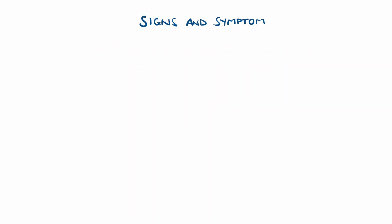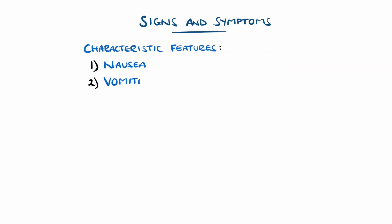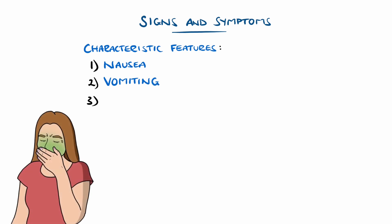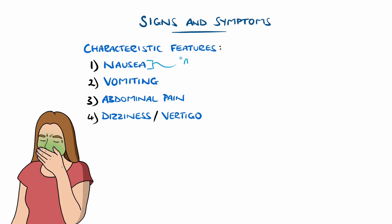The characteristic features are nausea, vomiting, a vague abdominal discomfort, often accompanied by dizziness or vertigo. A phenomenon called the avalanche phenomenon exists where once the person has nausea, even if they are removed from the motion, the symptoms can continue worsening until vomiting.